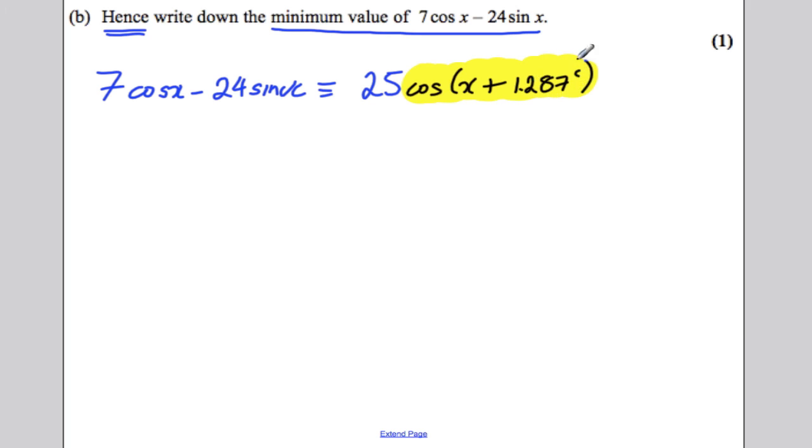Now, cos, what's the minimum cos can ever be? Well, it's negative 1. So the minimum this can ever be is simply negative 25. And it's simple as that. Now, it doesn't ask you the x value that makes that happen. So you don't have to solve it. It just asks the minimum value. That's why it's one mark.